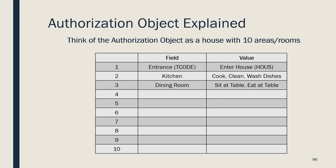After you enter the house, you really can't do anything unless it is specifically part of the access granted via the authorization object in the role. So in order for you to do anything in the kitchen, using our house analogy, the kitchen field must be included in the authorization object. Then the field value for kitchen will state whether you can cook, clean, or wash dishes in the kitchen. The activity you can perform — clean, cook, or wash dishes — is based on the field value granted in the authorization object. So if only cook is listed in the value, then that's all you can do.